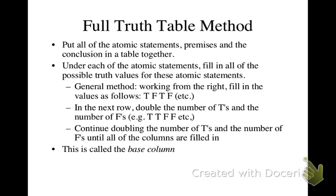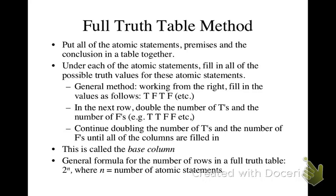These columns where you put all of the basic truth values are called the base columns. The general formula for the number of rows in a truth table is 2 to the n, where n equals the number of atomic statements in the argument.